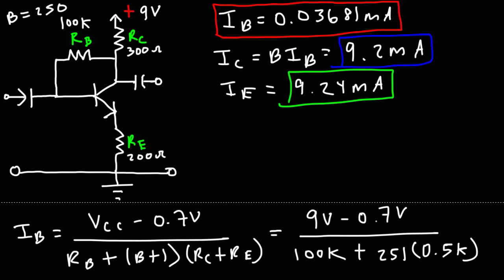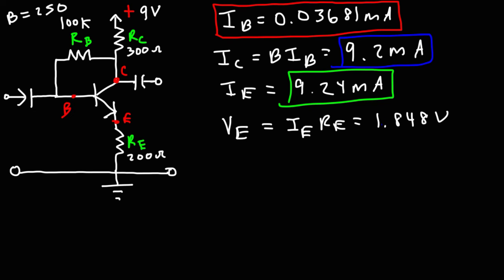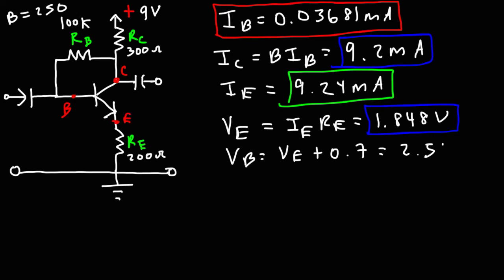Now we can calculate VC, VE, and VB. VE is the voltage drop across RE: IE times RE, which is 9.24 milliamps times 0.2 kilohms, giving 1.848 volts. VB equals VE plus 0.7 volts, so VB is 2.548 volts.